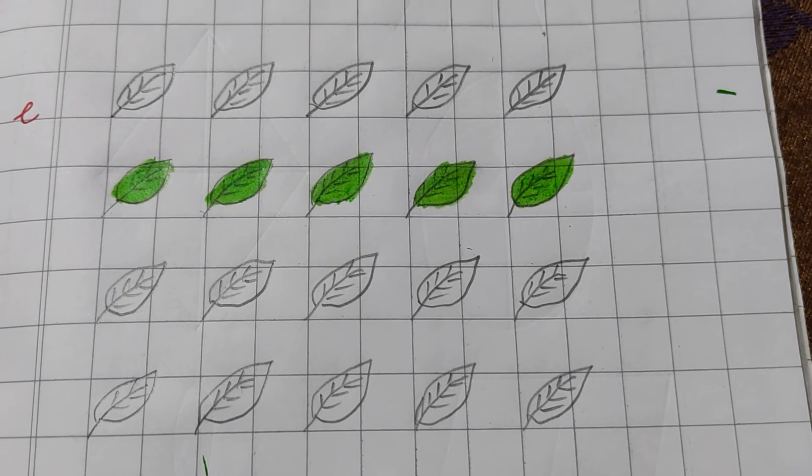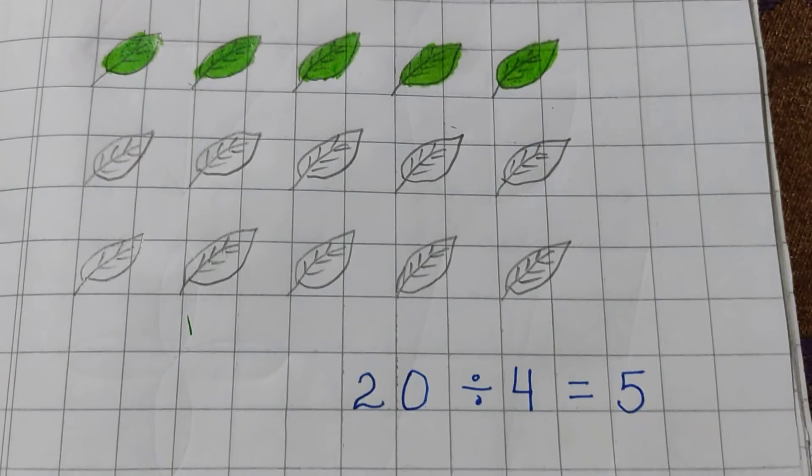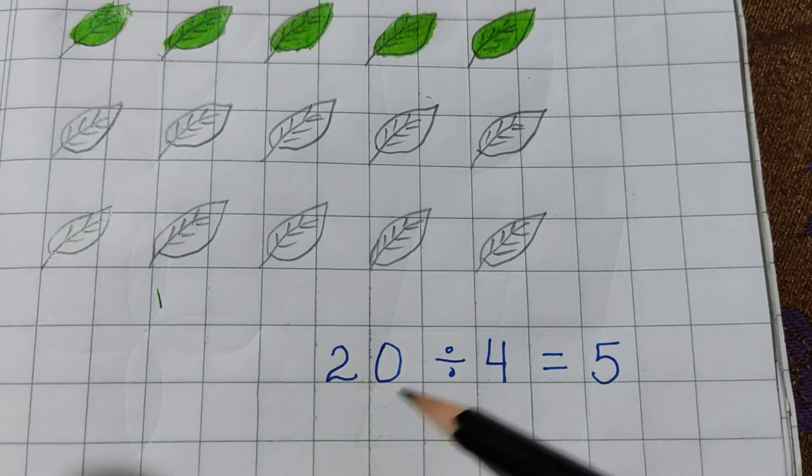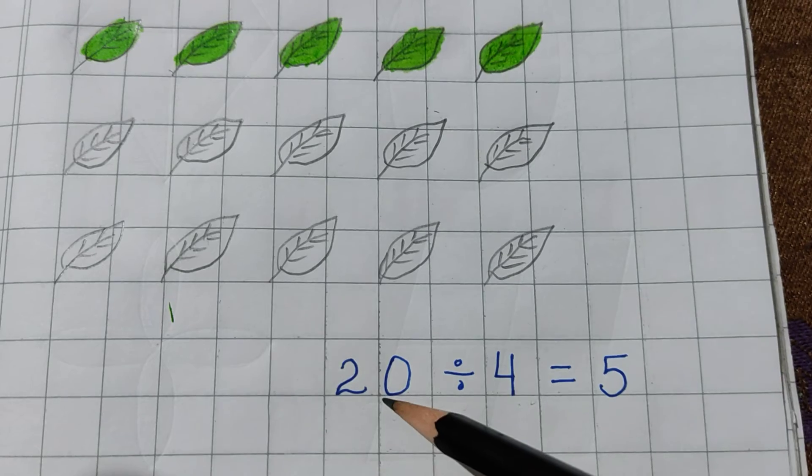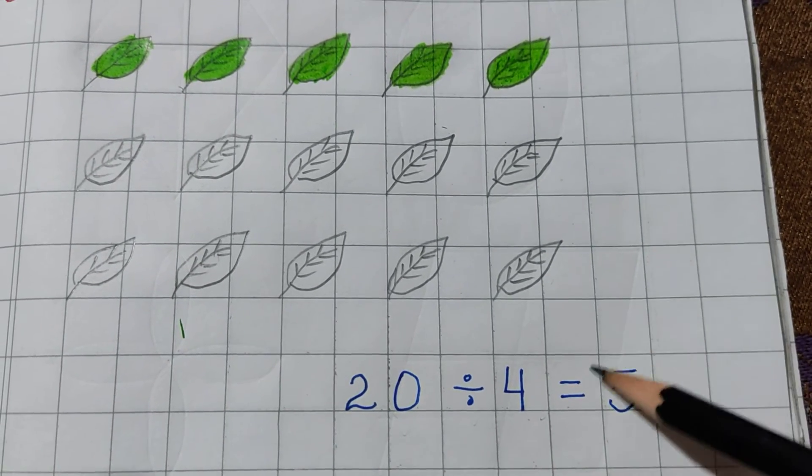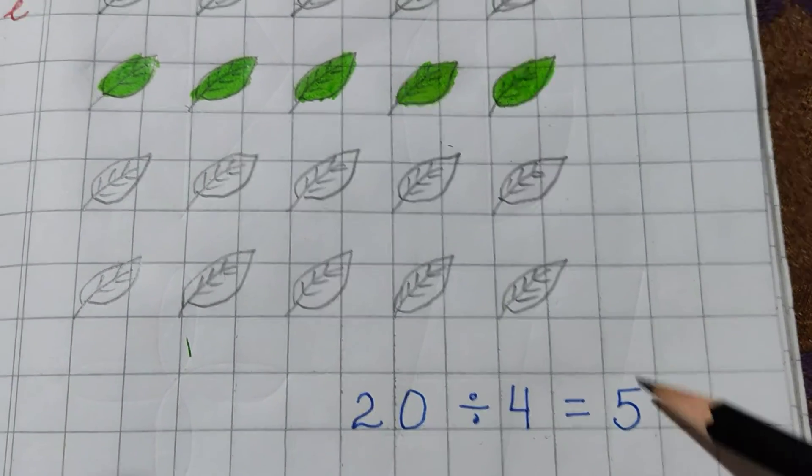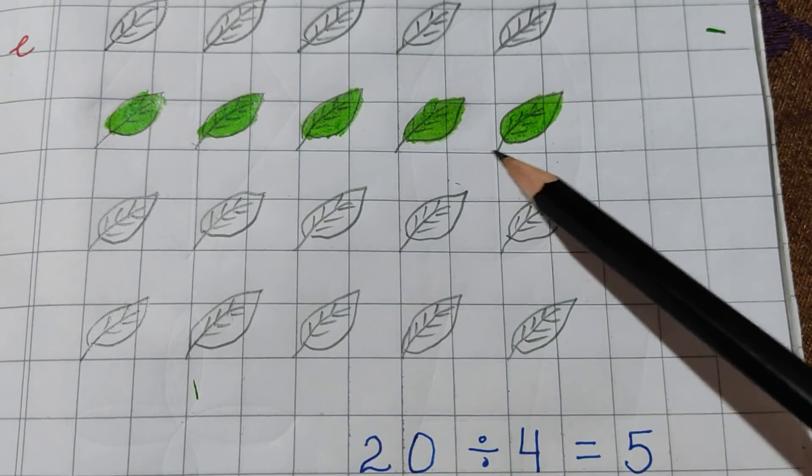So, I have to divide these 20 leaves by 4. Okay? I have shown it. 20 divided by 4. So, we have to read the table of 4 to get 20. 4, 5 is a 20. 5 is our answer.